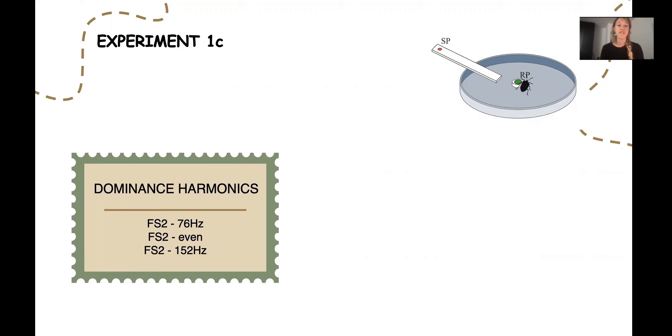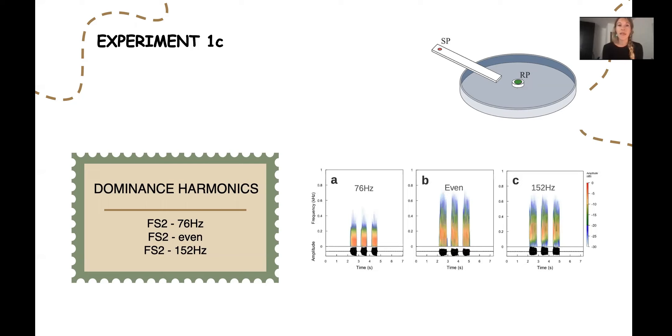For the third part, since the final aim was to use the FS2 playbacks to attract the animals to the trap in the field, it was important to assess whether any alteration of the frequency pattern could affect the male behavior response. In this case, we used the cardstock round arena.